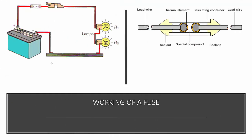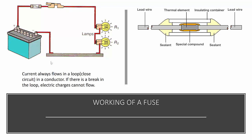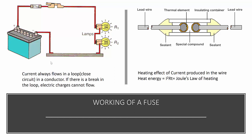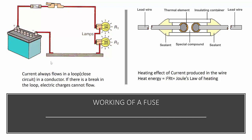Working of a fuse: Before understanding how a fuse works, remember two things. First, current always flows in a loop in a conductor; if there is a break in the loop, current cannot flow. Second, the heating effect of current produced in a wire is given by H = I²RT, where I is current, R is resistance, and T is time — this is Joule's law of heating. When current passes through a conductor, the components offer resistance, and the work done to overcome this resistance appears as heat, directly proportional to the square of current, resistance, and time.